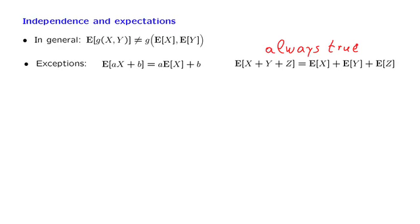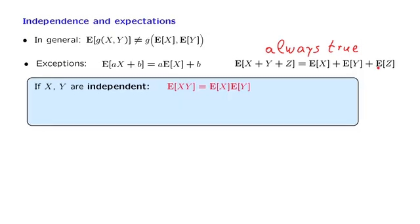When we have independence, there is one additional property that turns out to be true. The expected value of the product of two independent random variables is the product of their expected values. Let us verify this relation.